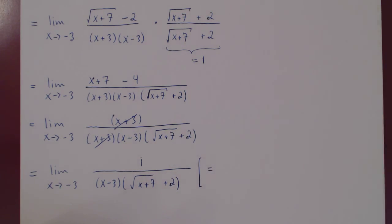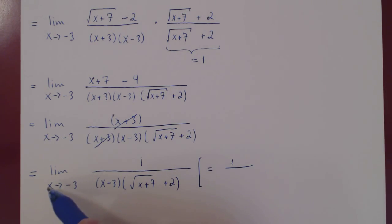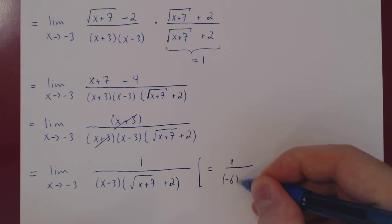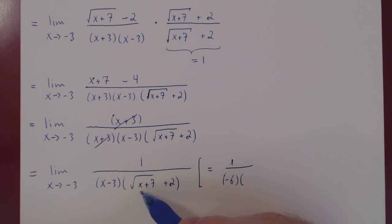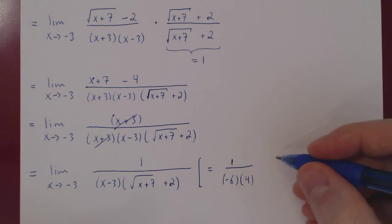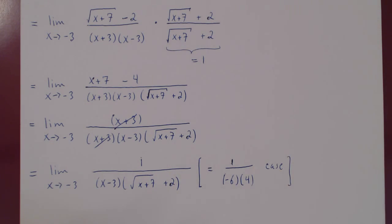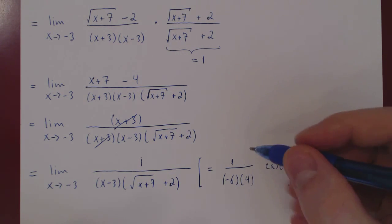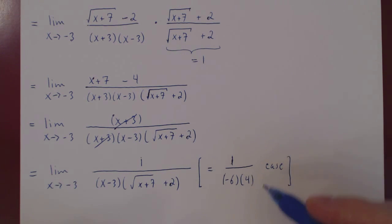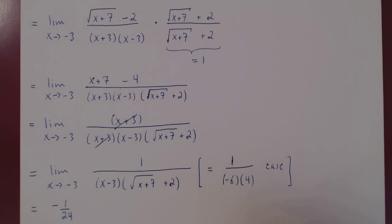We have our new limit. We'll look at the case we're dealing with. 1 is always 1. As x approaches negative 3: negative 3 minus 3 is negative 6, our first factor. Negative 3 plus 7 is 4, root of 4 is 2, 2 plus 2 is 4. So we have 1 over negative 6 times 4. The numerator approaches 1, the denominator approaches negative 24, and so the final answer is negative 1 over 24.